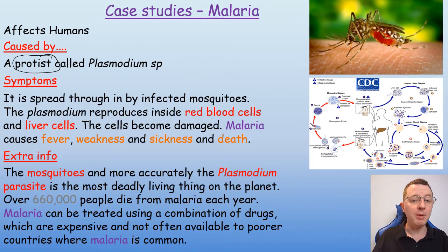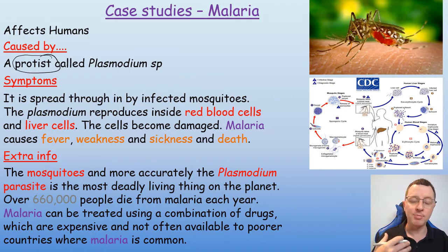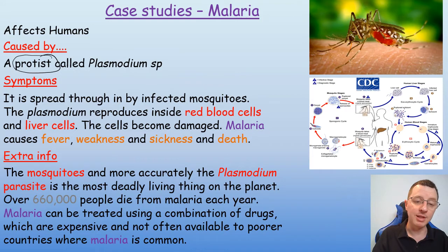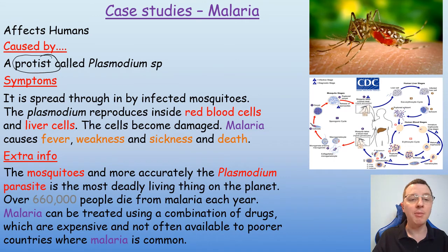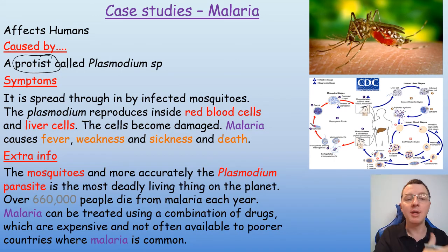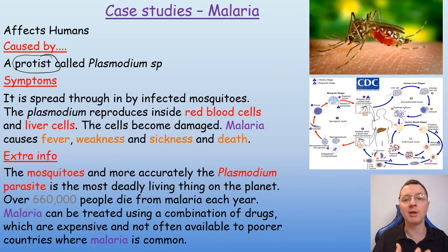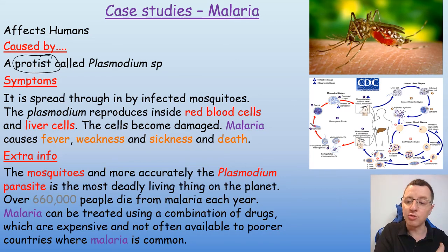The plasmodium has quite a complex life cycle. It spends part of its time within the red blood cells, then it spreads to the liver cells. If you're bitten by a mosquito again and blood moves into that mosquito, the plasmodium infecting the red blood cells will move into that mosquito as well, where another separate part of its life cycle takes place before the plasmodium reinfects somebody else when the mosquito bites a new person.